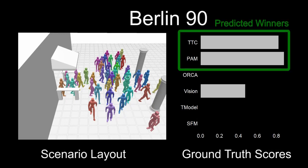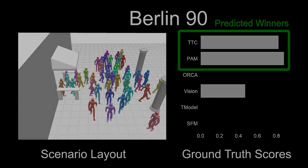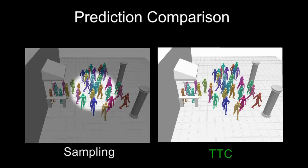In this scenario, two methods are predicted as the best approach, both of which match closely the ground truth. The winning methods are able to naturally resolve the dense congestion in the center of the simulation.